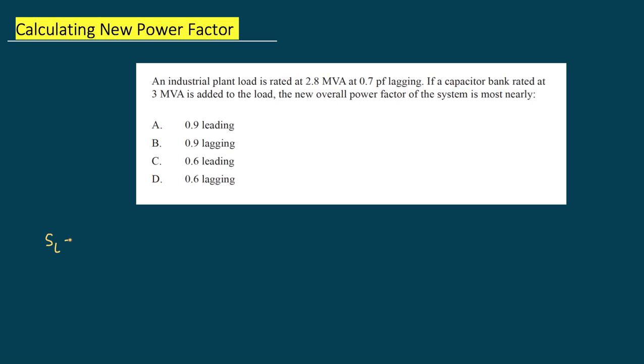So we have a load S_L which is comprised of, of course, P_L and jQ_L, and that's given as 2.8 MVA at cosine of theta, which we haven't calculated yet but we will based off the given 0.7 power factor lagging.